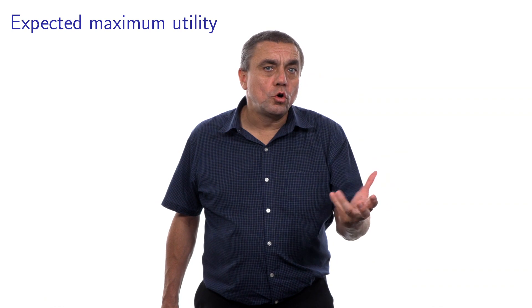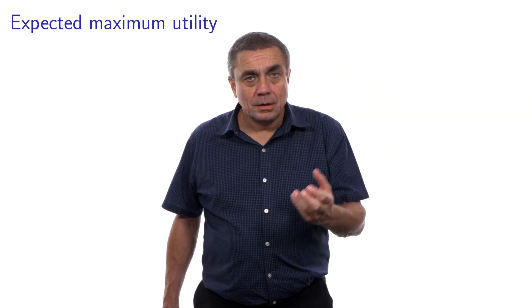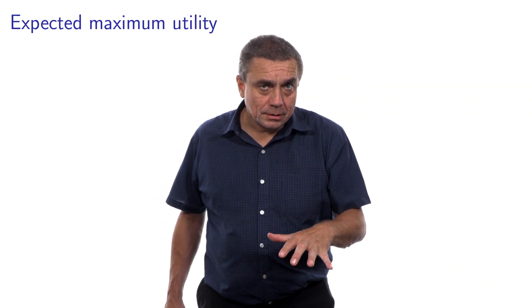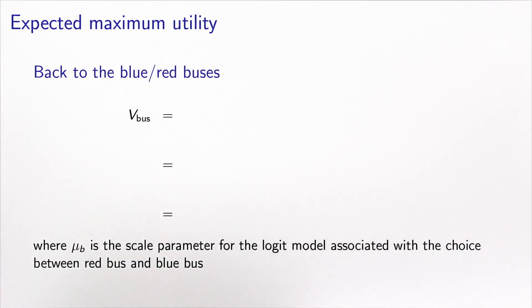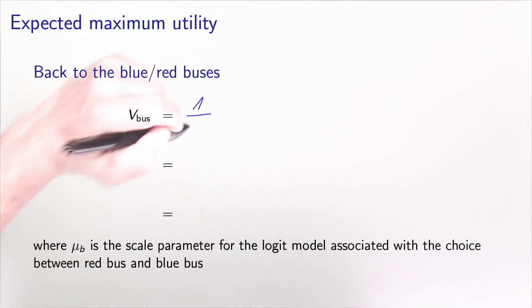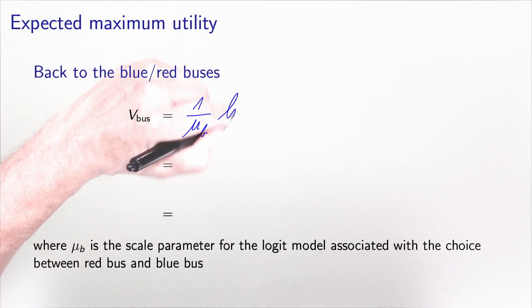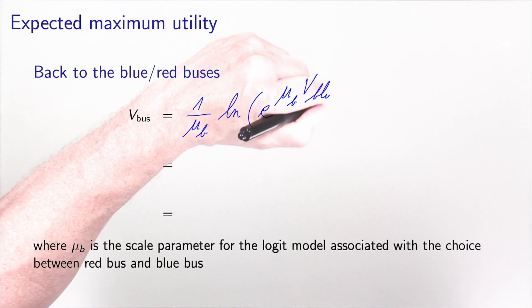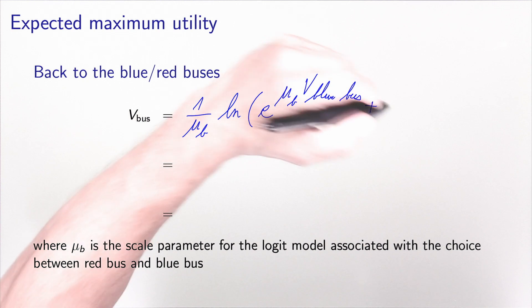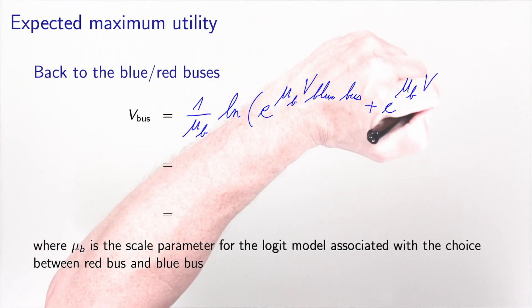In the context of the nested logit model, we call a group of alternatives a nest. The expected maximum utility of a nest is defined by this log-sum formula depending on the utility of all alternatives within the nest. For the blue bus and red bus example, the expected maximum utility for the bus nest is: 1 divided by mu_b times log of (e to the mu_b * v_blue_bus plus e to the mu_b * v_red_bus).